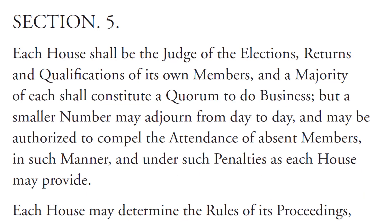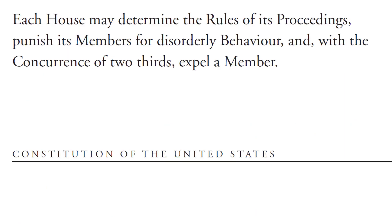Section 5. Each House shall be the judge of the elections, returns and qualifications of its own members, and a majority of each shall constitute a quorum to do business. But a smaller number may adjourn from day to day, and may be authorized to compel the attendance of absent members, in such manner, and under such penalties as each House may provide. Each House may determine the rules of its proceedings, punish its members for disorderly behavior, and, with the concurrence of two-thirds, expel a member.